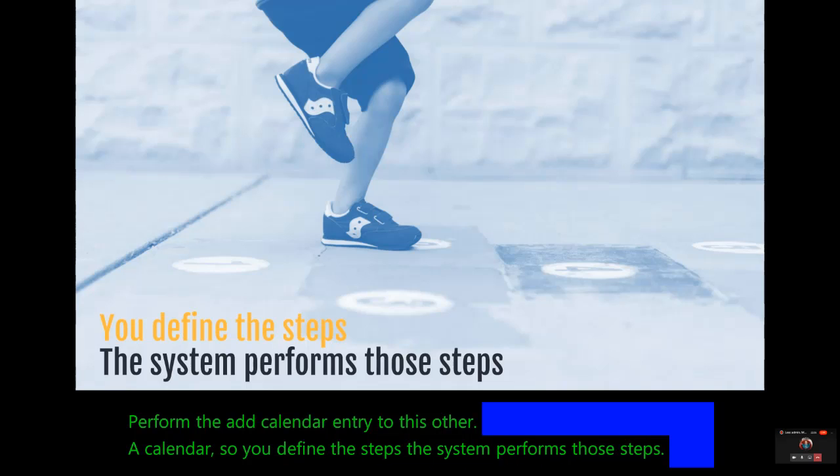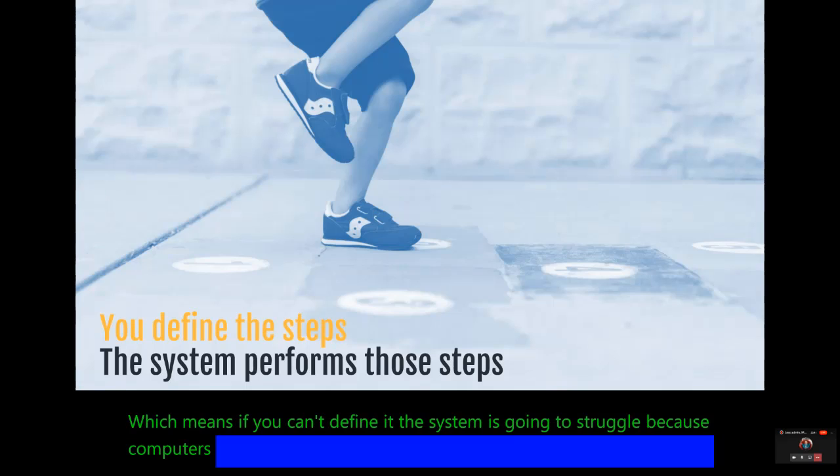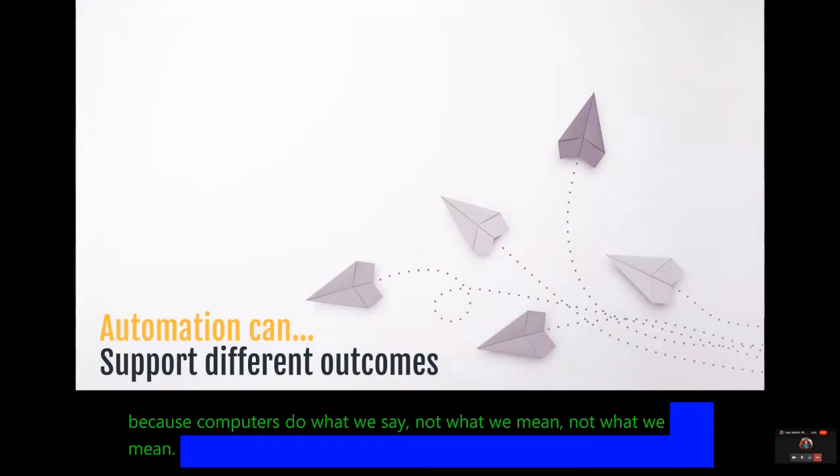Which means if you can't define it well, the system is going to struggle because computers do what we say, not what we need, not what we mean. So if you can't define it well, automation is really valuable.